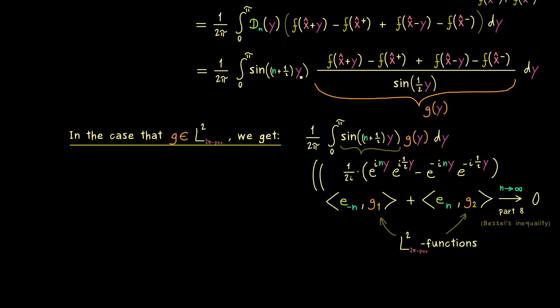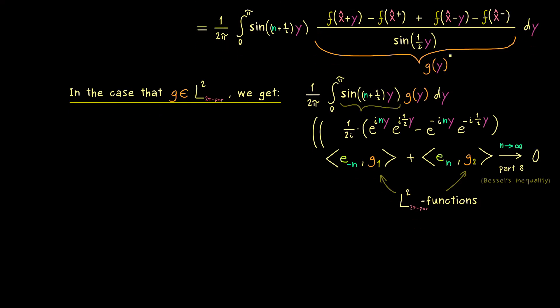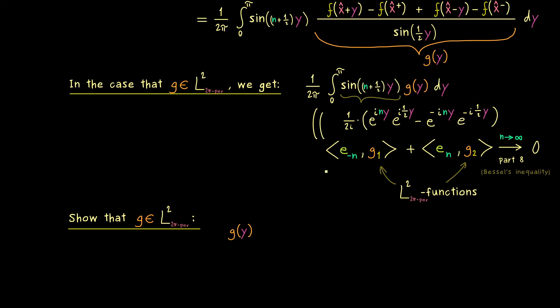However there we already know that f is an L2 function so f is quite nice so the numerator does not make any problems. The only thing that could happen is that the sine function in the denominator makes everything explode. But also this can only really happen at 0 or around 0 because everything else is quite nice for the sine function as well.